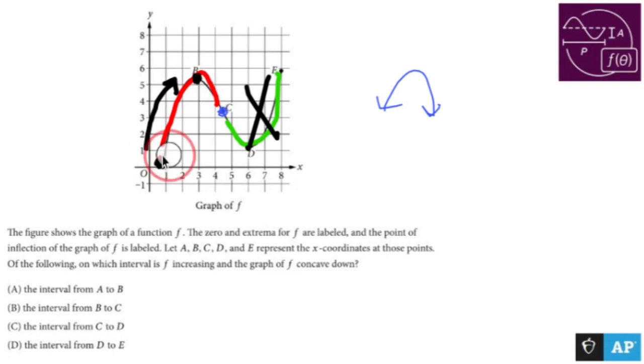So what interval is my graph concave down and increasing? Looks like it's from a to b. And so that gives me the option - that's my answer.